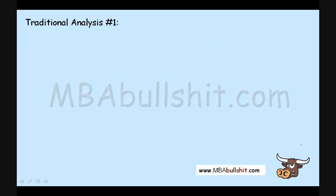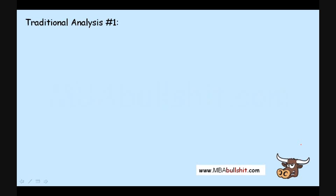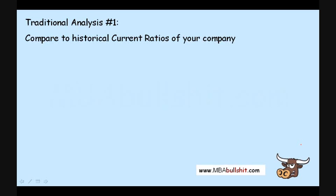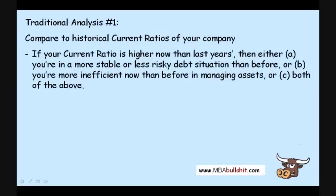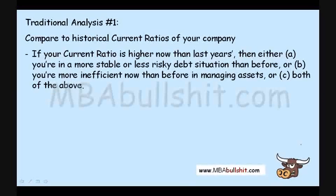How do we analyze this ratio? In finance, the two traditional ways of using financial ratios are time series analysis — or historical analysis — and comparison to the industry. The first is to compare your current ratio now to the historical current ratios of your company. If your current ratio is higher now than last year's, then either you are in a more stable or less risky debt situation, or it could mean you are more inefficient in managing assets.